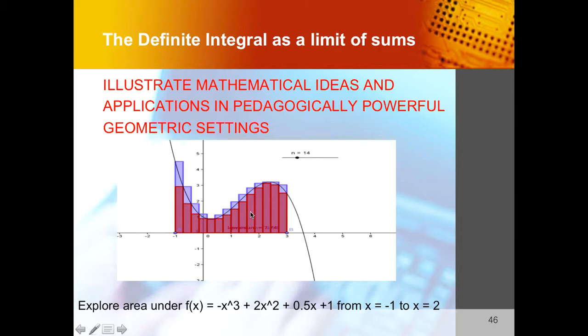So the darker one that you see here represents what is known as the lower sum and the purple one which you see is known as the upper sum, and we are going to manipulate these rectangles and visualize the area under the curve.